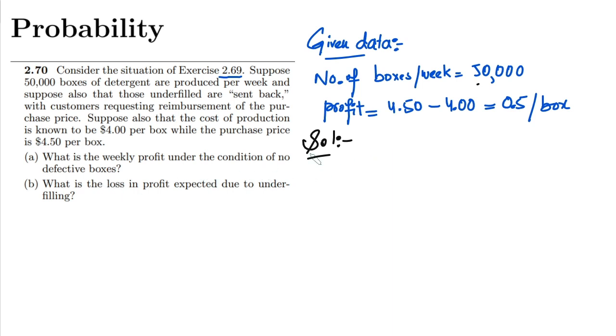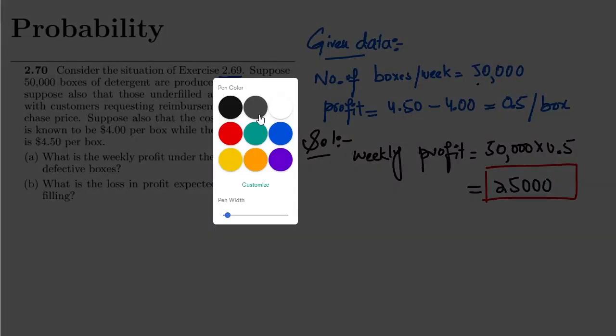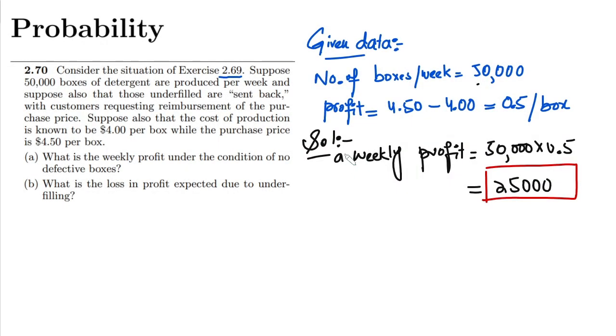under the condition of no defective boxes will be 50,000 multiplied by $0.50, which equals $25,000. So that is the answer of part A.